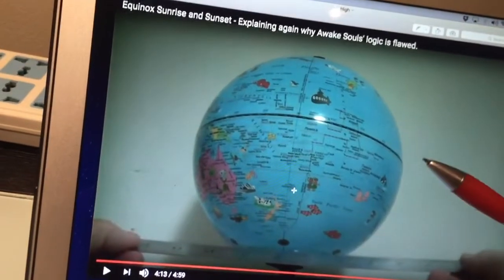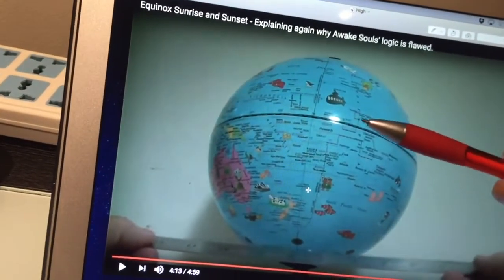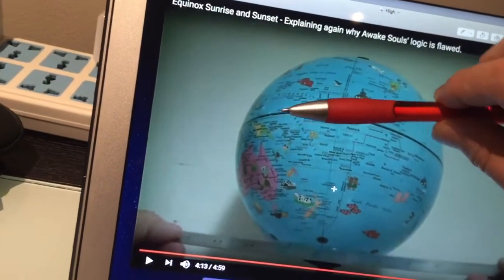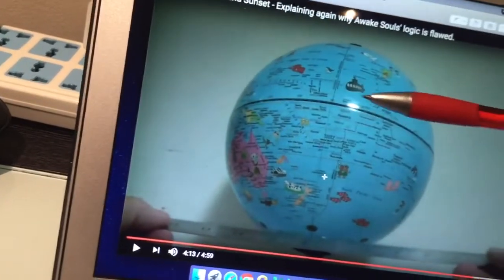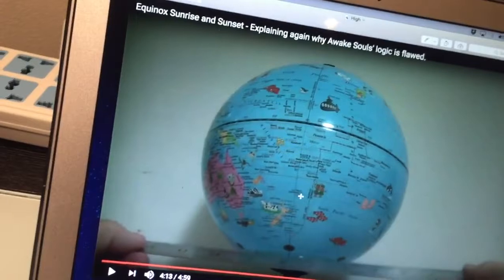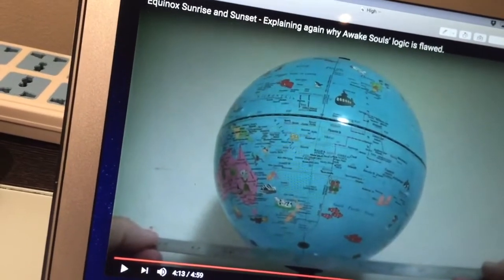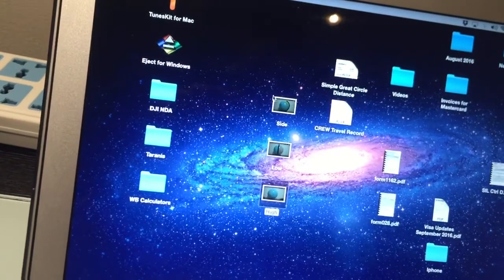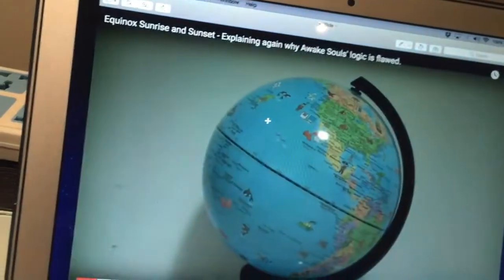See what we're looking at? We're looking at the Equator going up, becoming level, and then moving back down. So right at this point, right here, where the Equator is level, is at the Terminator on the Equinox.